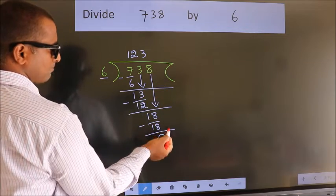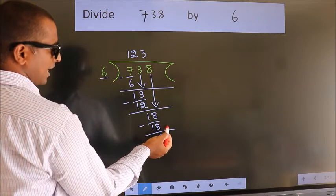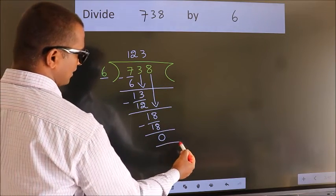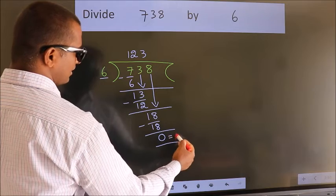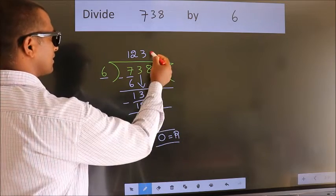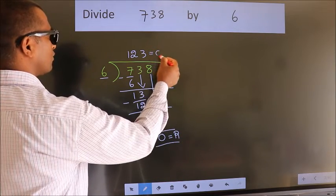No more numbers to bring down, so we stop here. This is our remainder. This is our quotient.